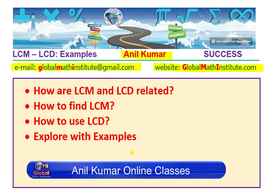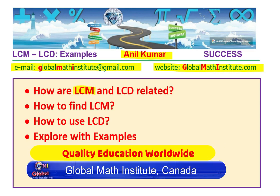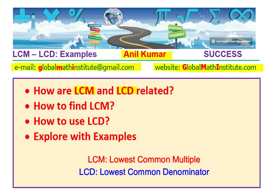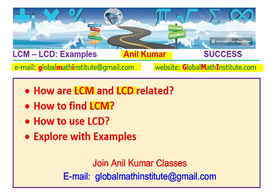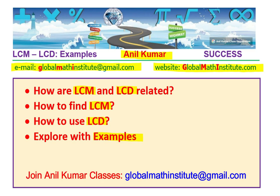Let us try to understand these two terms: LCM, which is Lowest Common Multiple, and LCD, which is Lowest Common Denominator. Once you find LCM, you can add fractions with different denominators — that LCM can act as the Lowest Common Denominator to add or subtract fractions. We'll take up some examples to explain the idea.